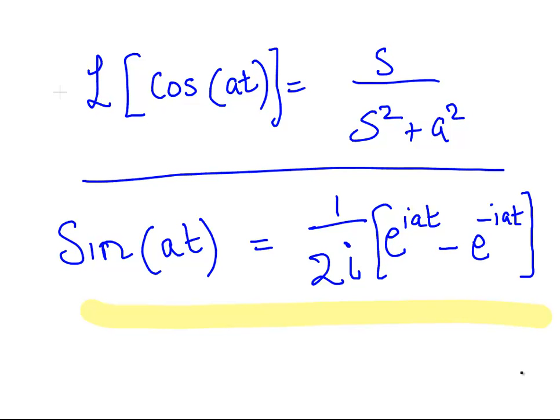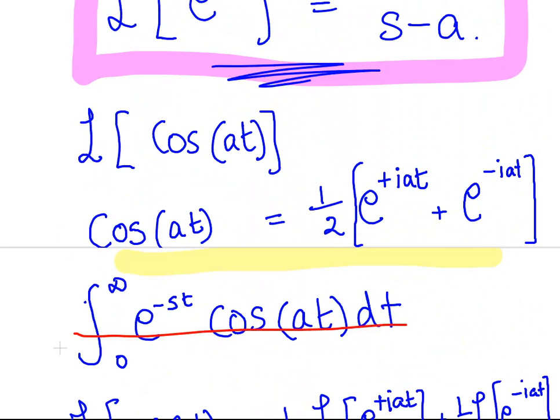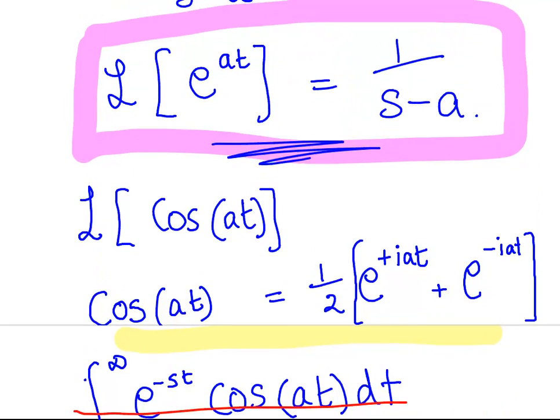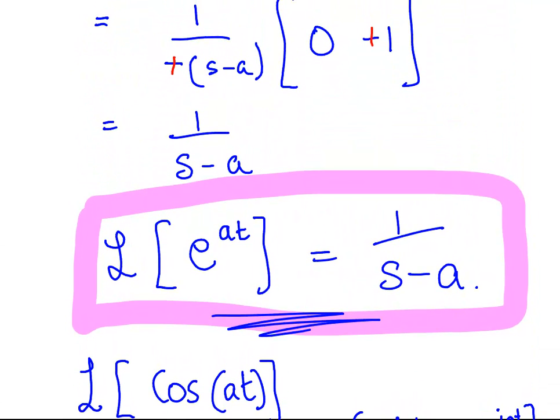Now the approach I was taking in that presentation, I'll just scroll back up here on my page, is that I was deriving from first principles the Laplace transform of e to the at, and that was equal to 1 over s minus a. Now that was a pretty straightforward Laplace transform calculation.